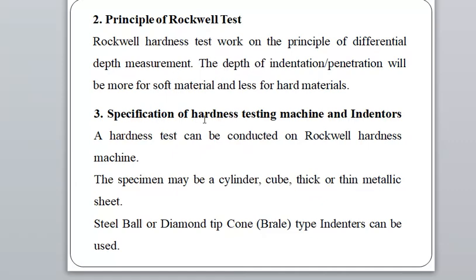Regarding specifications: hardness testing is conducted on the Rockwell Hardness Testing Machine. The specimen may be cylindrical, cubic, or thick or thin metallic sheet type. The indenter used may be a steel ball or cone type whose tip is coated with diamond material.